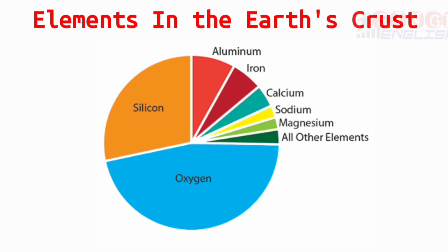Look at this figure. Some major elements are found in the earth's crust: oxygen 46%, silicon 27%, aluminum 8%, iron 6%, calcium 5%, magnesium 3%, and some other elements 5%.